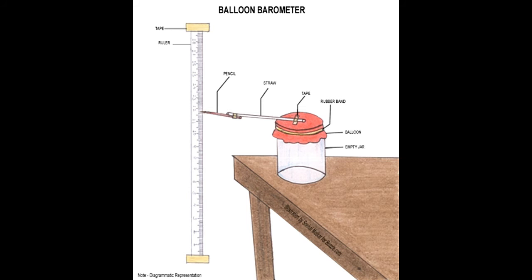How to make a balloon barometer - A balloon barometer can be made with household equipment to record changes in atmospheric pressure. The straw taped on the balloon with a pencil attached on the other side marks the measurements on the scale.